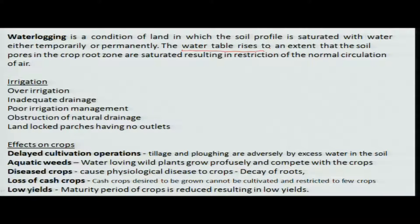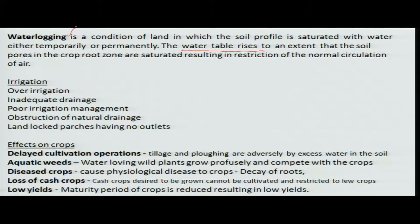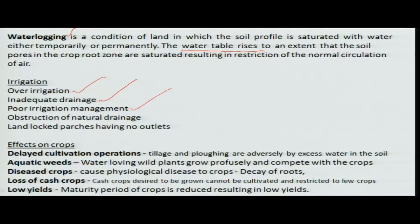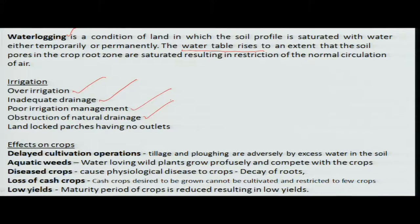This causes a circulation problem. Water logging normally happens in alluvial areas or close to alluvial areas, where inflow from the river or adjoining areas tries to raise the water table. Other reasons are over-irrigation — irrigating before the water goes down out of the root zone — inadequate drainage, poor irrigation management, blocked natural subsurface drainage due to construction activities, or land with bowl-type geomorphology where water has no outlet.